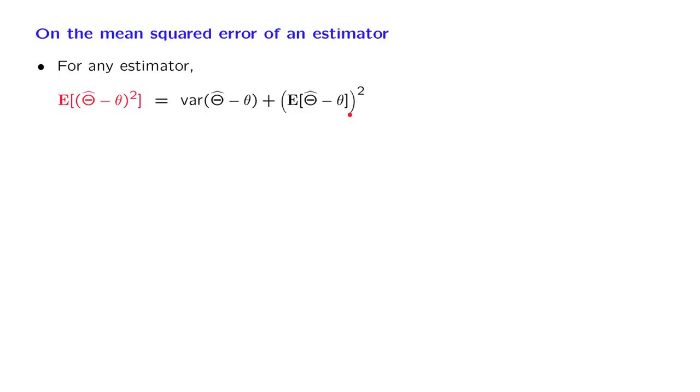Where does this formula come from? Well, we know that for any random variable Z, this formula is valid. And if we let Z be equal to the difference between the estimator and the value that we're trying to estimate, then we obtain this formula here.